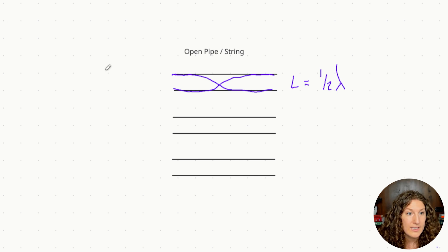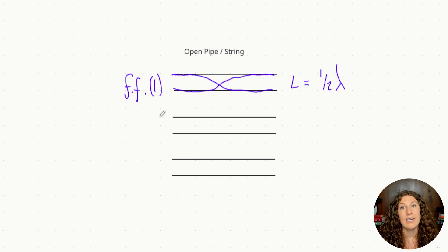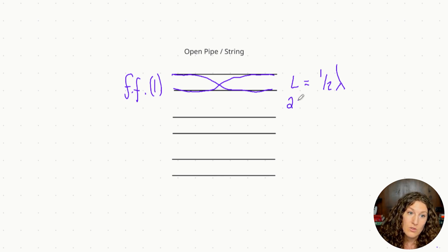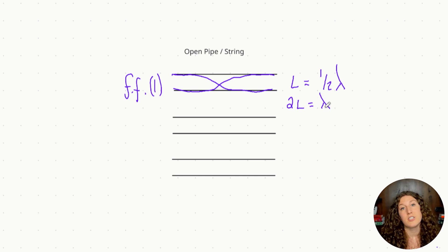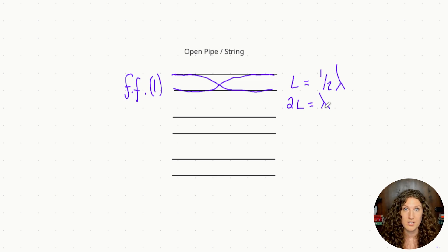At the fundamental frequency in an open pipe, the length of whatever pipe, string, or tube is going to be equal to one half of the wavelength. We can rewrite that equation as two times the length of the pipe equals wavelength. Both equations say the same thing — it just depends whether you want everything in terms of length or wavelength. That is the fundamental frequency, or first harmonic, in an open pipe or string — it's always going to be this equation.